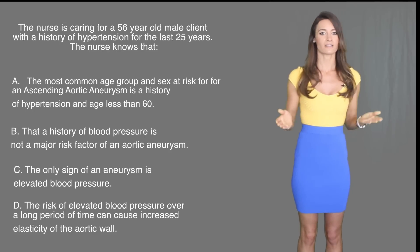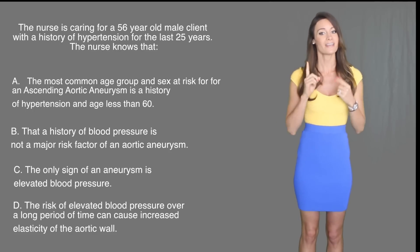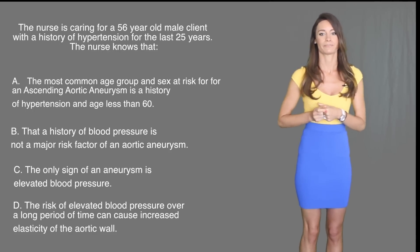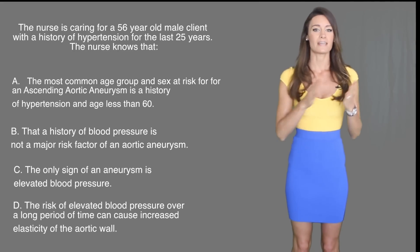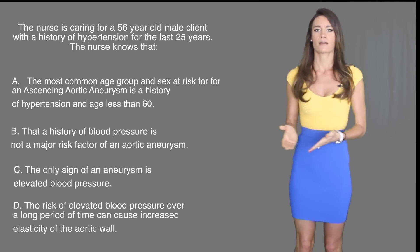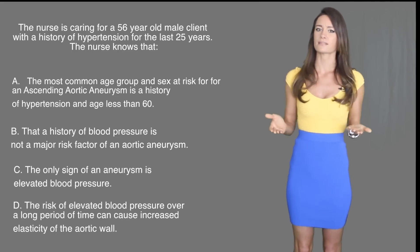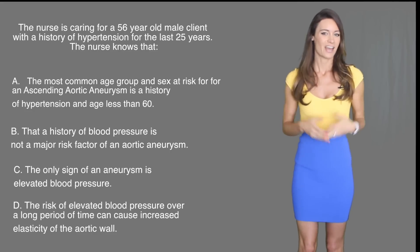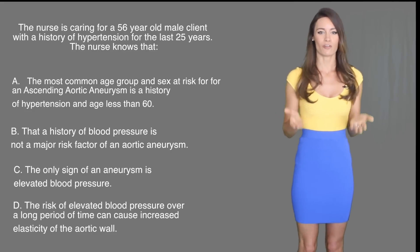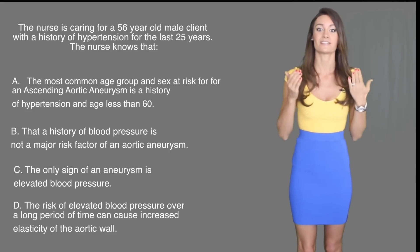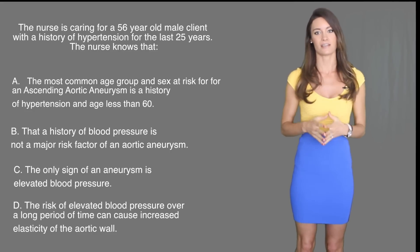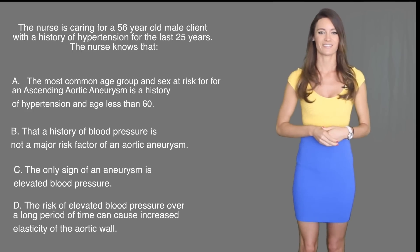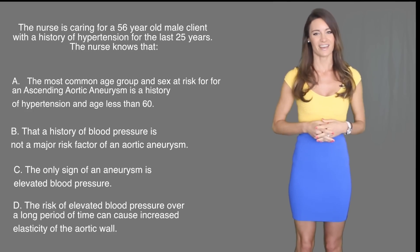B — a history of elevated blood pressure is not a major risk factor of an aortic aneurysm. This is incorrect because elevated blood pressure is in fact a major risk factor. C says the only sign of an aneurysm is elevated blood pressure — since there are many signs and symptoms, this cannot be true. D states that elevated blood pressure over a long period of time increases the elasticity of the aortic wall — this is incorrect; it actually decreases the elasticity. So the only correct answer is A.